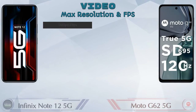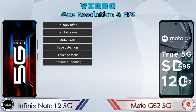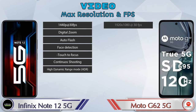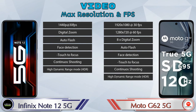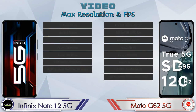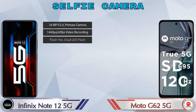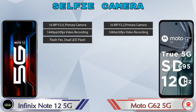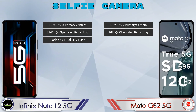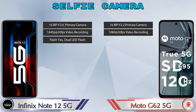If we talk about video camera features, the Note 12 5G has seven and the Moto G62 5G has eight different types of features available. Now let's talk about the front selfie camera: the Note 12 5G has a single camera with three different features available, and the Moto G62 5G also has a single camera with two features available.